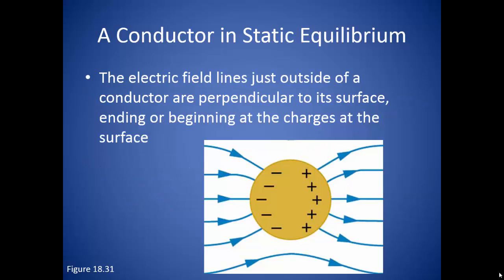The second property for a conductor in static equilibrium is that the electric field lines right next to the surface of the conductor will be perpendicular to the surface of the conductor. Now immediately outside of that surface the electric field can be changing, but at the surface the lines are perpendicular. These lines also either originate or terminate with the charges that are found on the surface of the conductor.